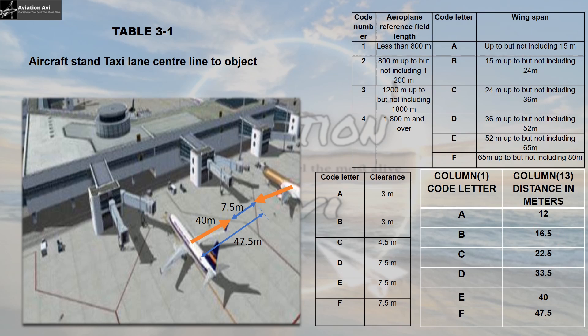If you have understood this, let us know in the comment section below how the value of 16.5 meters is arrived at for a code B aircraft. All the values you need to calculate this are right on your screen — pause the video and comment below to test how far your understanding of Table 3-1 has developed.